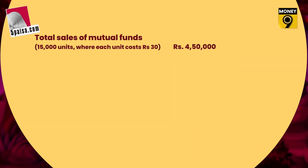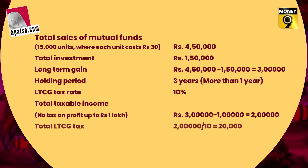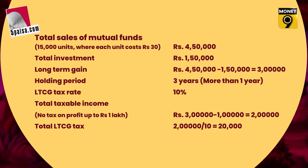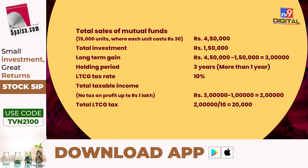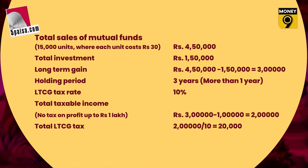Let us see how LTCG is calculated. Say in 2019, a person named Rajiv bought 15,000 units of a mutual fund where each unit cost ₹10. In 2022, the cost of one unit of equity mutual fund reached ₹30. If he sells them, he will get ₹4.5 lakh rupees. On an investment of ₹1.5 lakh, he got ₹4.5 lakh, giving him capital gains of ₹3 lakh.